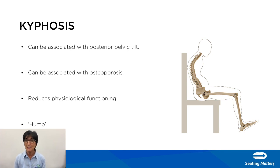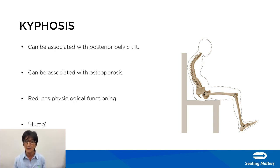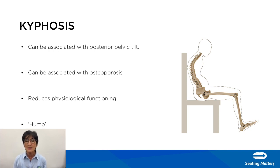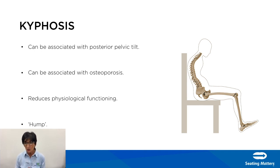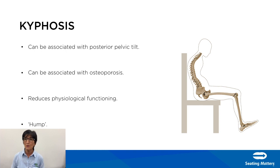Kyphosis is a curvature of the upper thoracic spine. Again, we need to determine if it is fixed or flexible. If fixed, we must accommodate it in a chair that supports the spine — a kyphotic spine cannot be accommodated in a straight-back chair. Kyphosis is usually associated with posterior pelvic tilt and osteoporosis. It can cause reduced physiological functioning, reduced oxygen saturation, difficulty with feeding and swallowing, and the client will present with a humpback appearance.